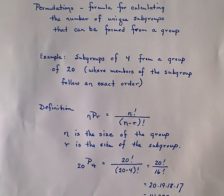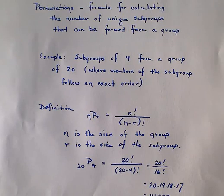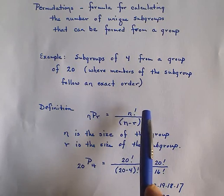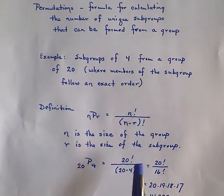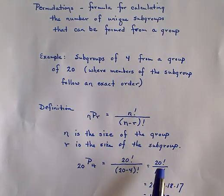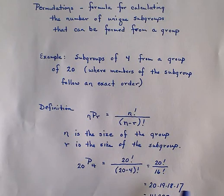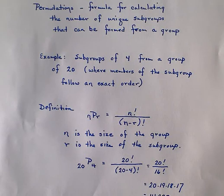Using the example from above, you have 20 P 4. Filling the numbers into the formula, that means we're going to have 20 factorial over (20 minus 4) factorial, which is 20 factorial over 16 factorial. When you cancel out the 16 factorial, you're left with 20 times 19 times 18 times 17, and that gives you 116,280 different subgroups you could create from that group of 20.